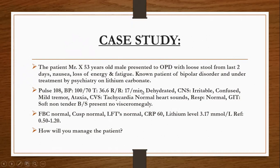These are the vitals given — pulse, BP, dehydration status, CNS, CVS, all are mentioned. Lab reports show FBC was normal, CUE was normal, LFT was normal, CRP was 60, and lithium level was very much increased at 3.17 mmol per liter.